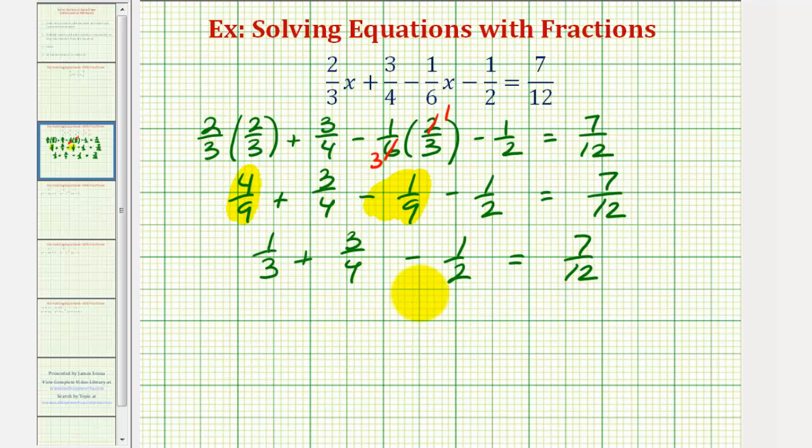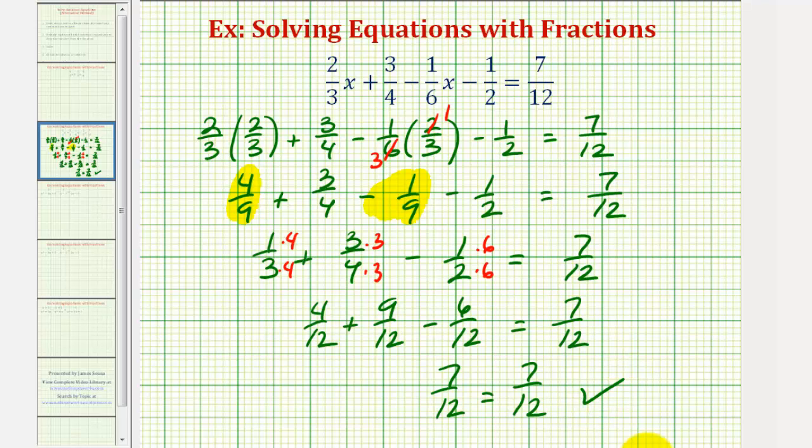And now let's go ahead and obtain the common denominator of 12. So multiply this by 4 over 4, multiply this by 3 over 3, multiply this by 6 over 6. So we have 4/12 plus 9/12 minus 6/12 equals 7/12. And 4/12 plus 9/12 is 13/12, minus 6/12 is 7/12. So this verifies that our solution is correct. Our solution is x equals 2/3.